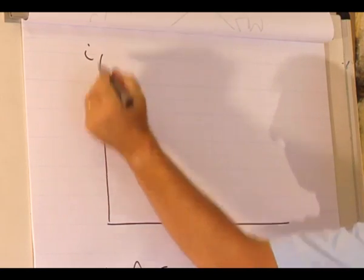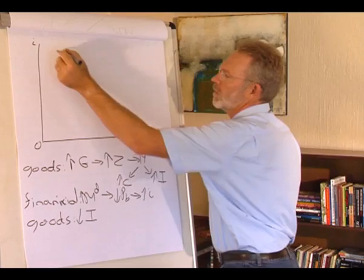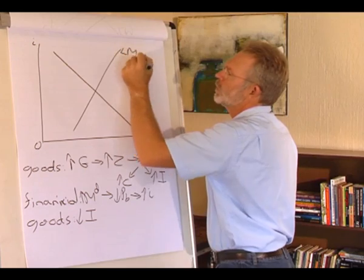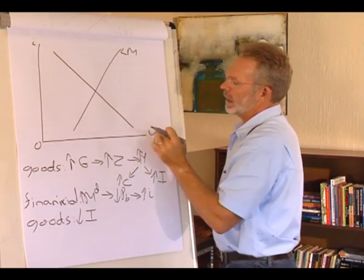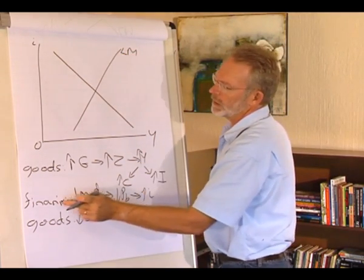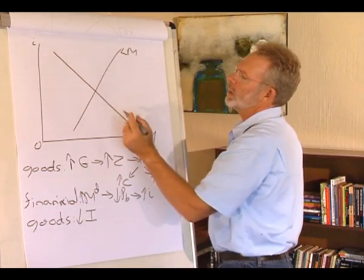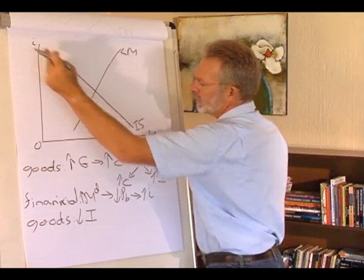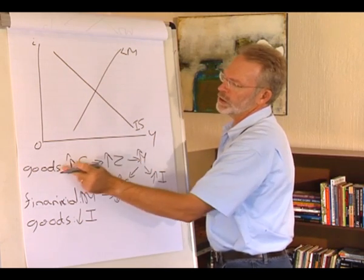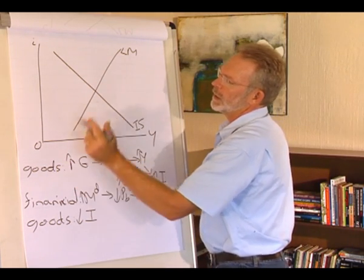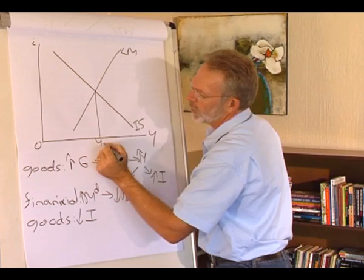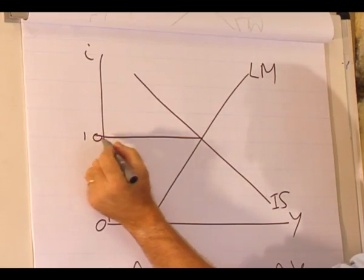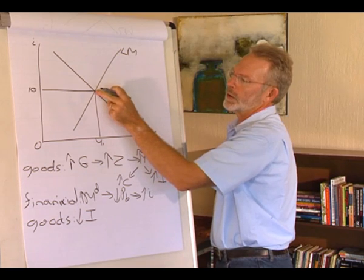We start with the IS-LM model. We have the LM curve showing all the combinations of interest rate and income where the financial market is in equilibrium, and the IS curve showing all the combinations of interest rate and income where the goods market is in equilibrium. The production level Y1 and the interest rate — at, say, 10% — both of these markets are in equilibrium.